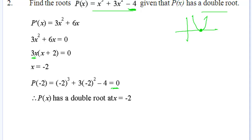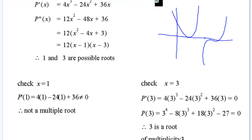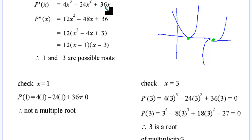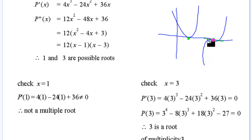If we're told it's a triple root, we go to the second derivative. A triple root means the function is equal to zero at the same point that we've got a stationary point — so the gradient is zero — as well as the second derivative being equal to zero. That means it must be a horizontal point of inflection that lies on the x-axis.